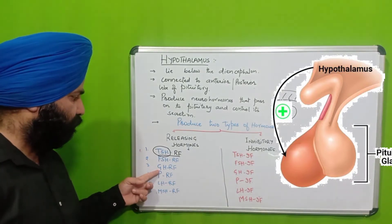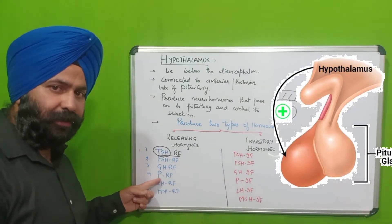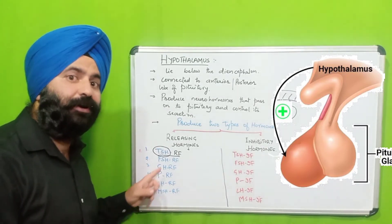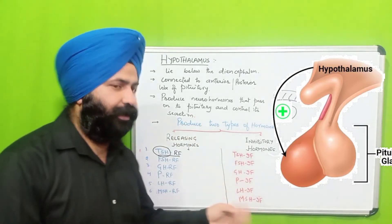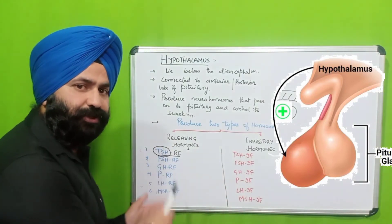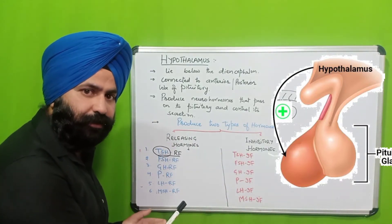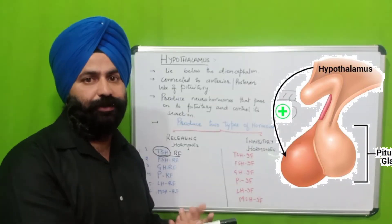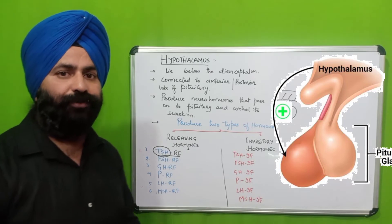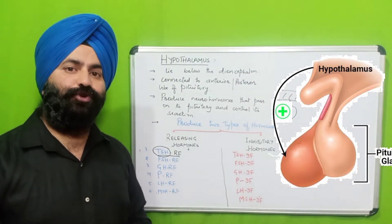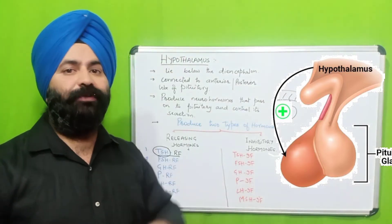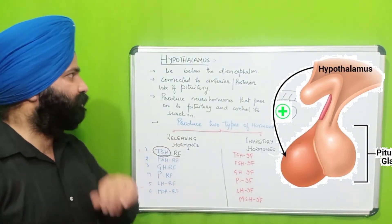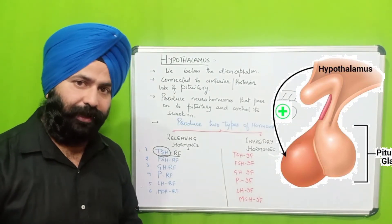So, Growth Hormone Releasing Factor, Prolactin Releasing Factor, Luteinizing Hormone Releasing Factor, and Melanocyte Stimulating Hormone Releasing Factor — all these releasing and inhibitory factors originate from the hypothalamus to regulate the anterior and posterior lobes of the pituitary. This is why, although pituitary is called the master gland, there is still a gland above it — the hypothalamus — that controls it.